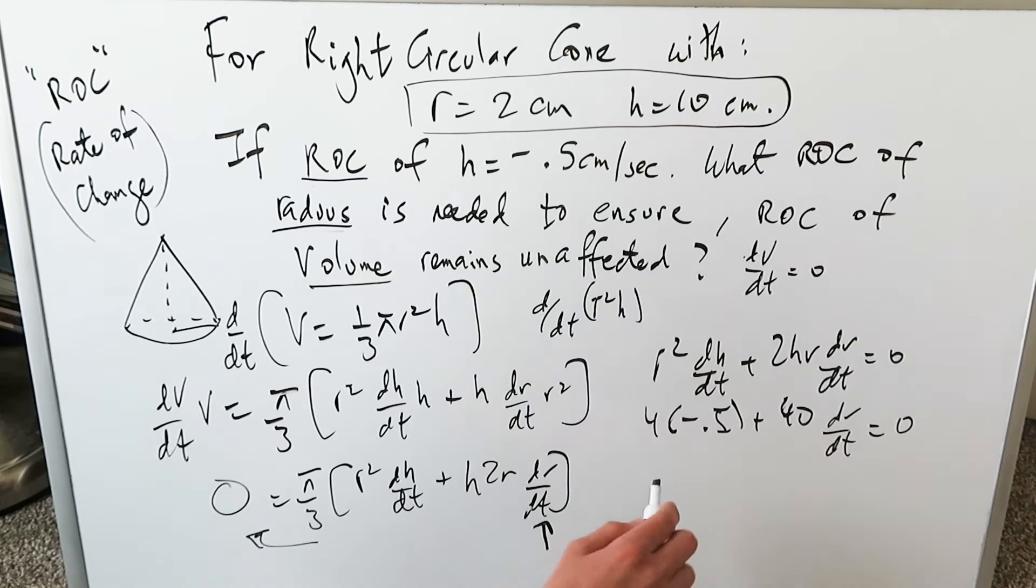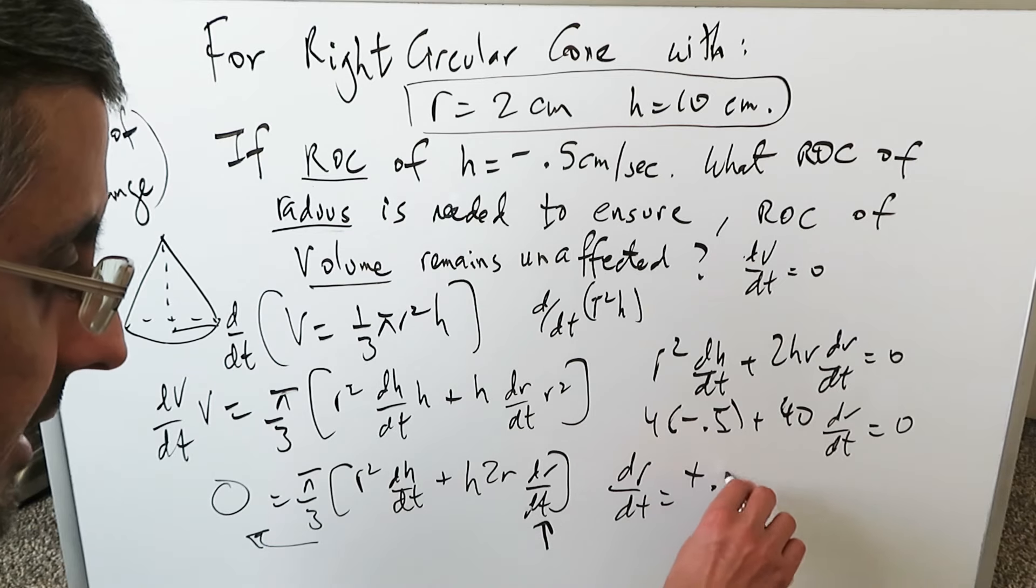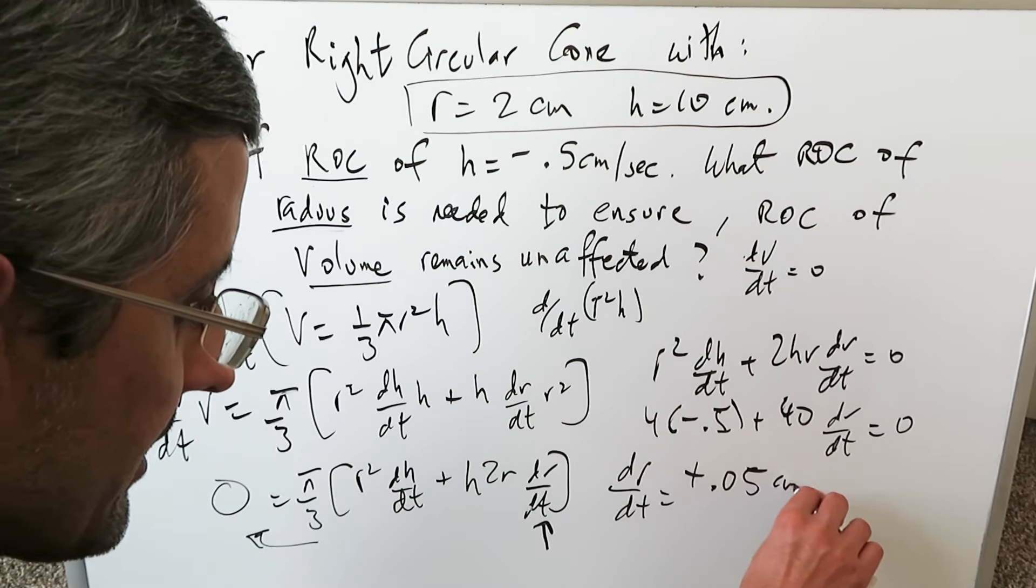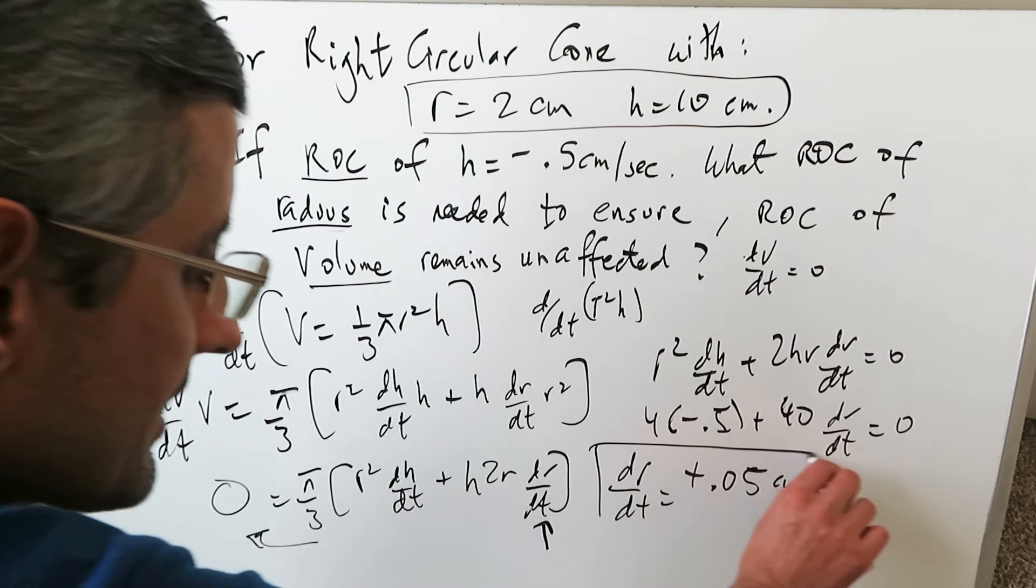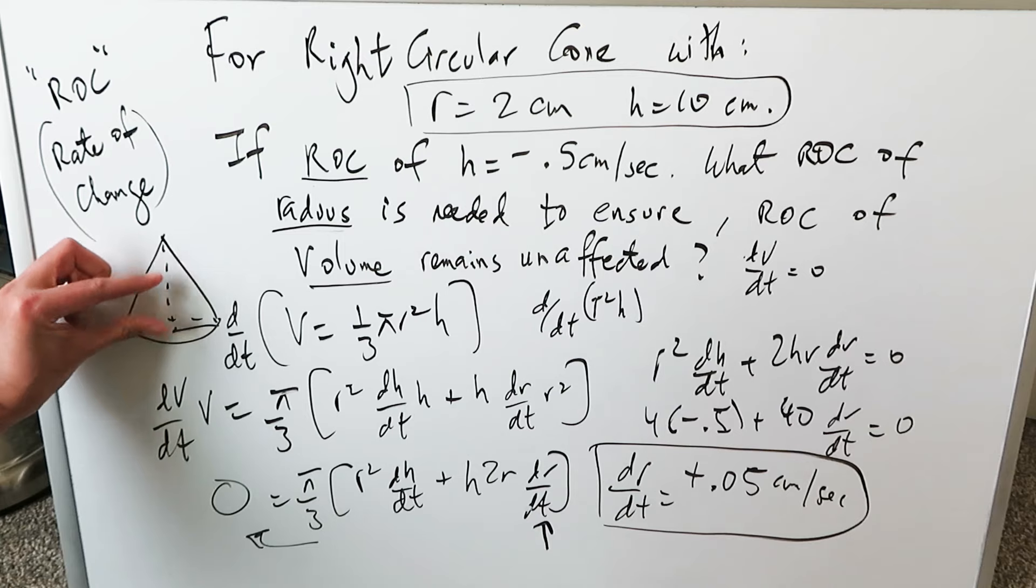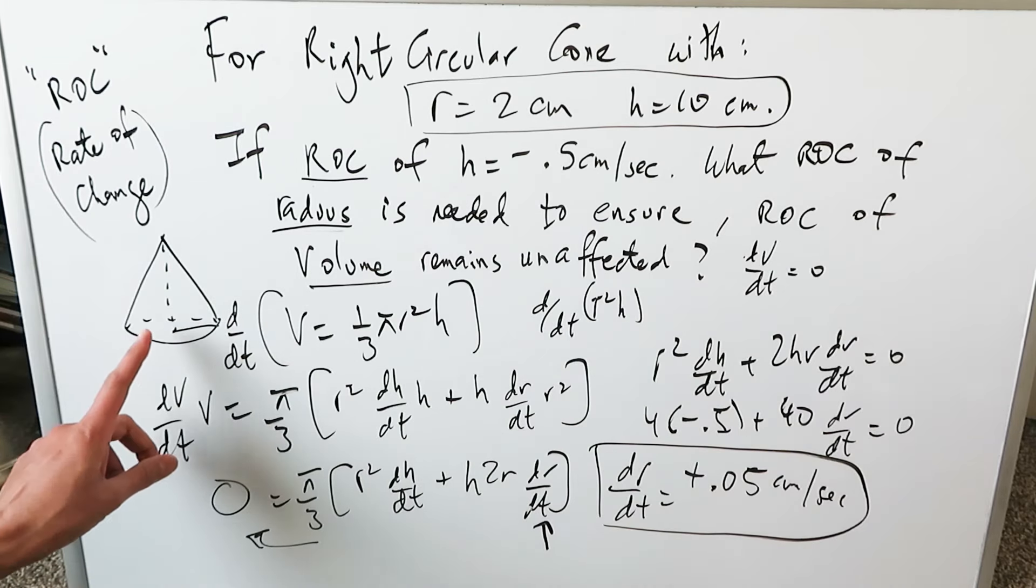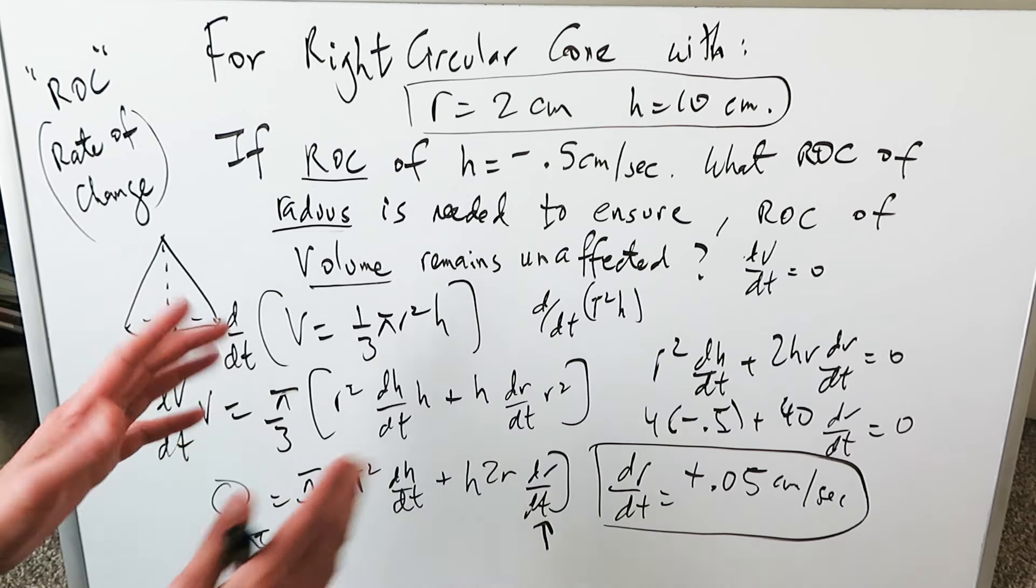What does that 0.05 tell you? It says that the rate of change of radius is a positive value, 0.05 centimeters per second. That right there would mean that your radius will have to increase with time. Think about it: the height is shrinking, the radius will have to increase with time to make sure that the rate of change of volume is unaffected.